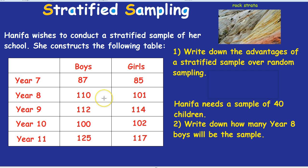In a random sample, you just pick random people, so it doesn't matter who they are or what group they represent. In a stratified sample, you need to make sure all groups are represented fairly.